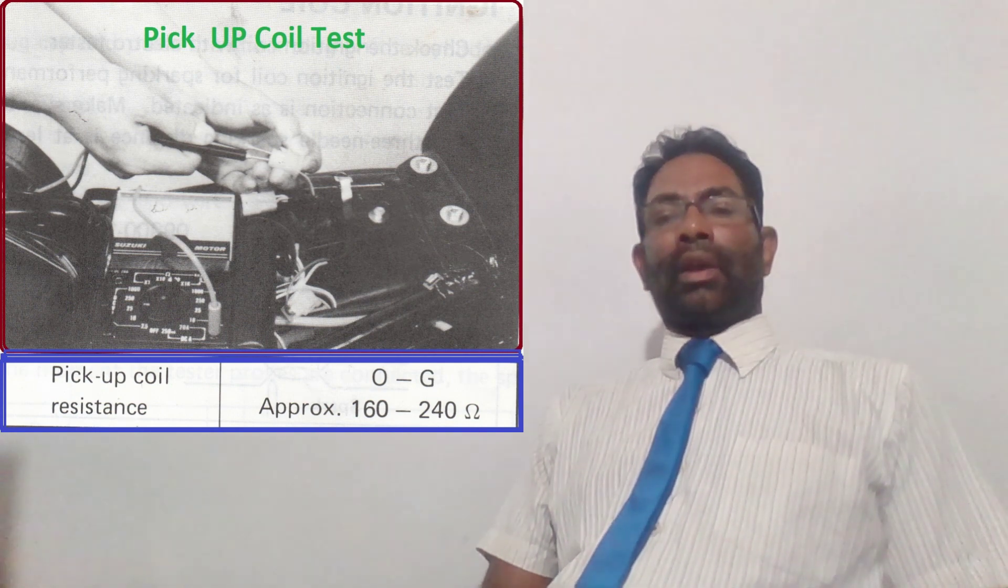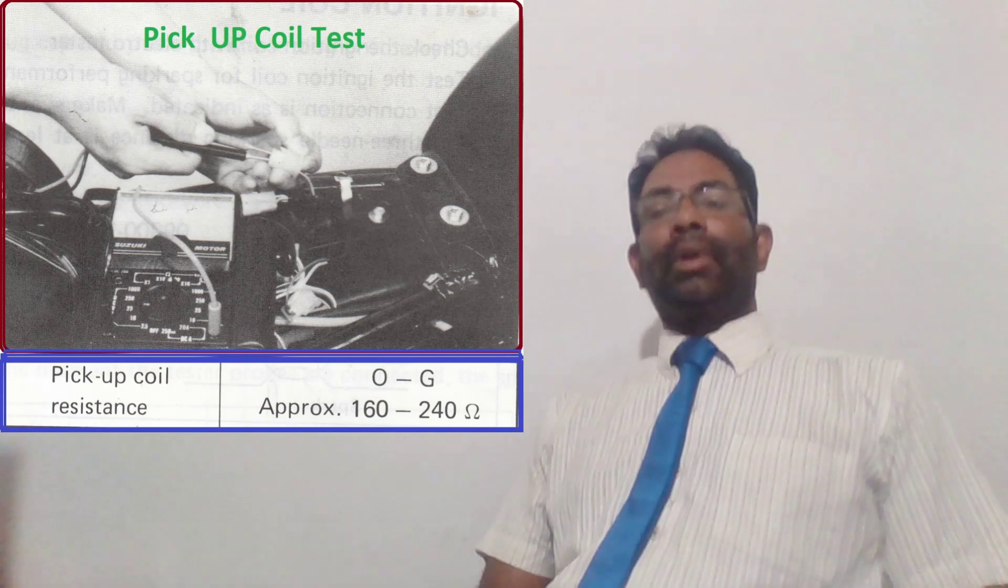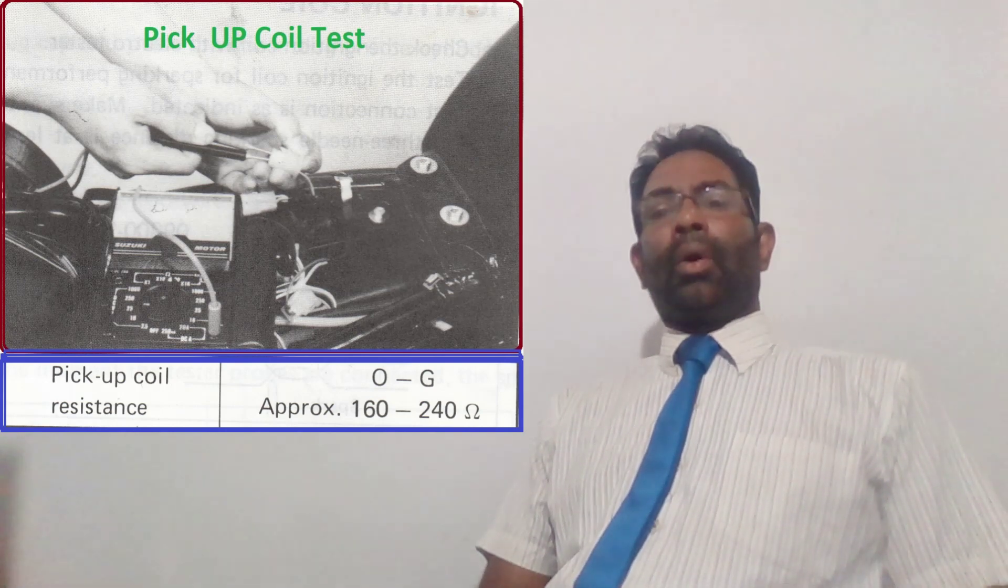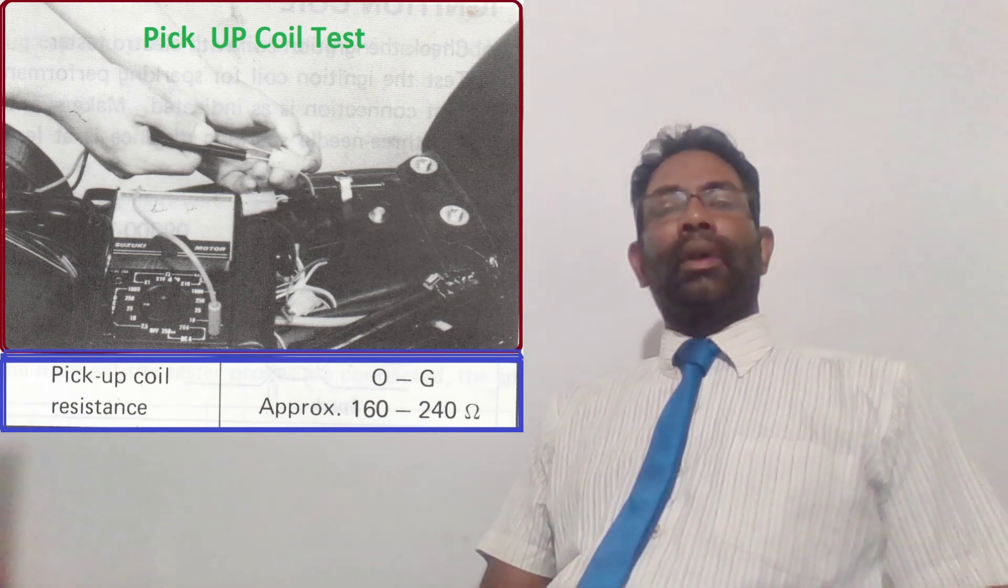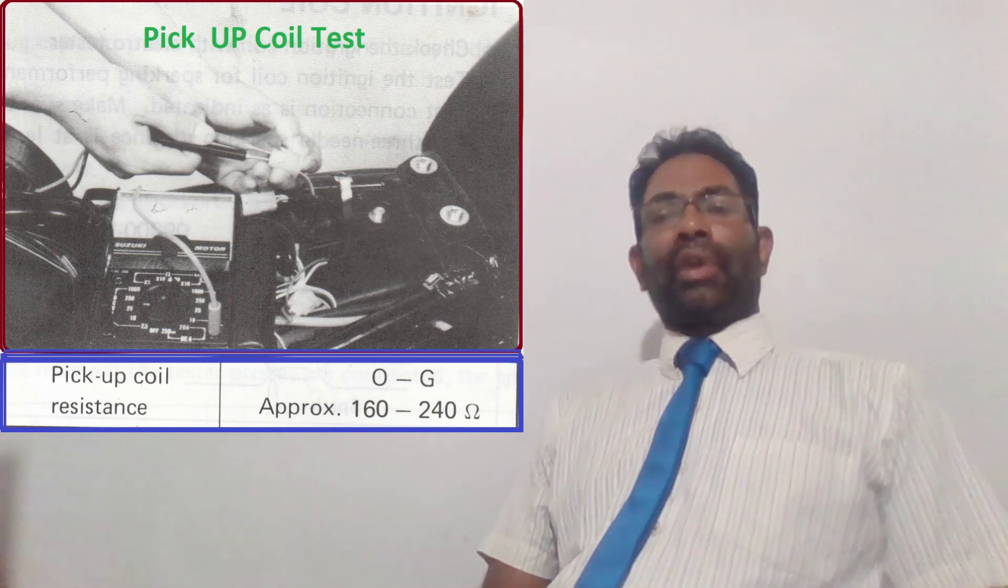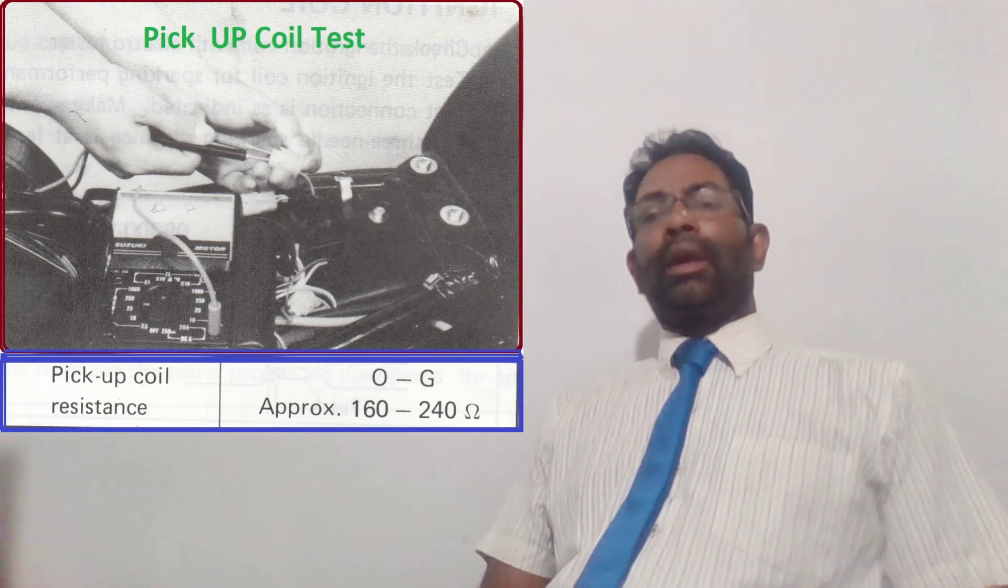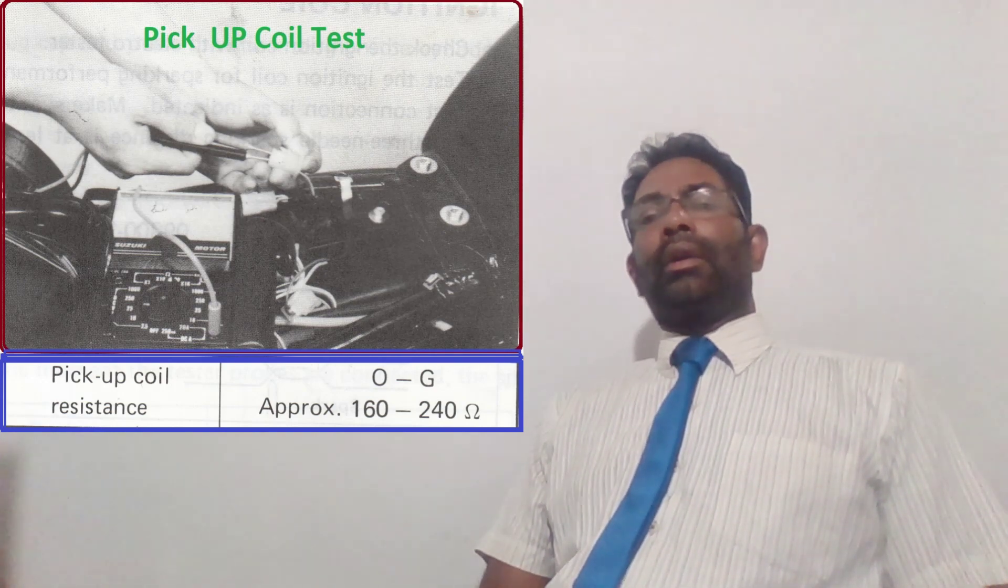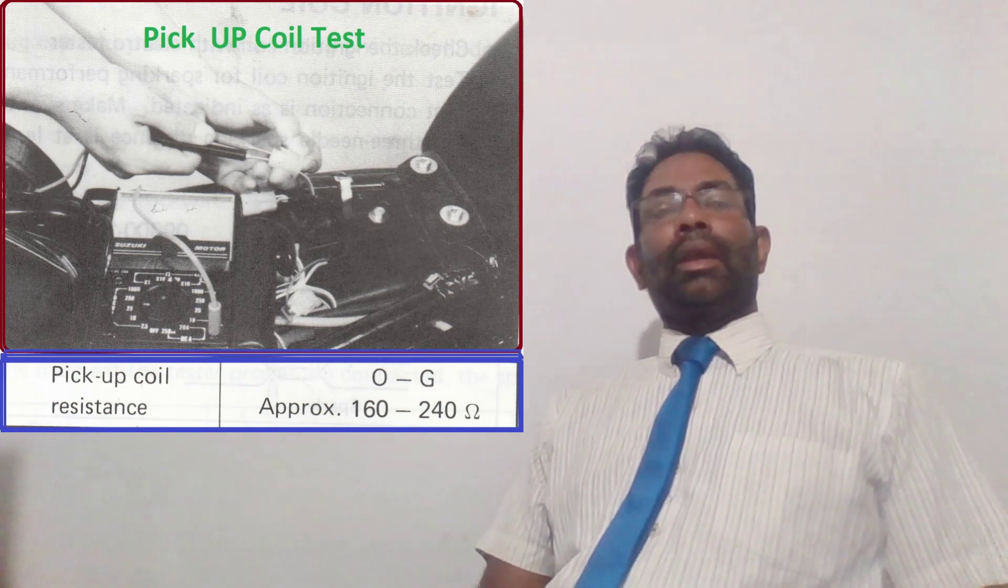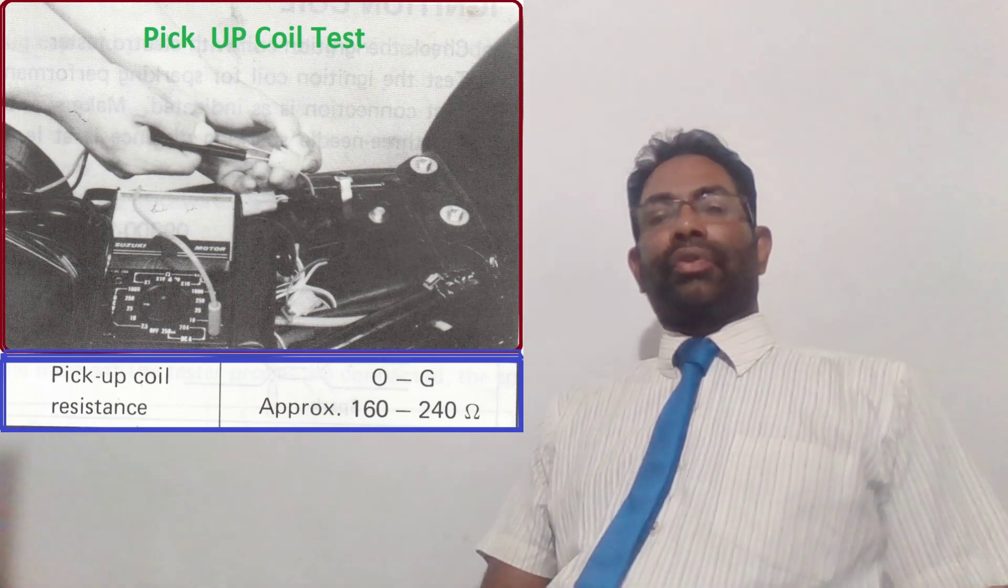You can use a pocket tester, range of ohms. You can see orange and green color wires - apply the tester and measure ohms. Manufacturer recommended range is approximately 160 to 240 ohms. I hope you all understand.